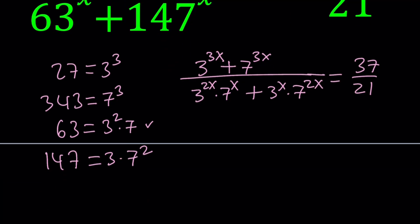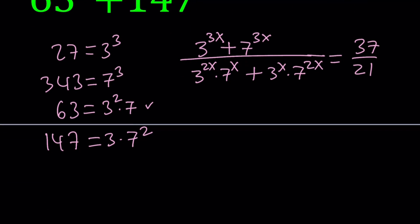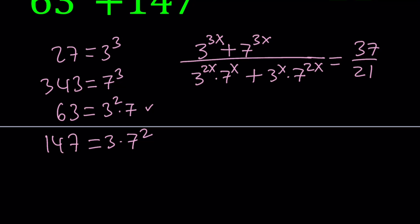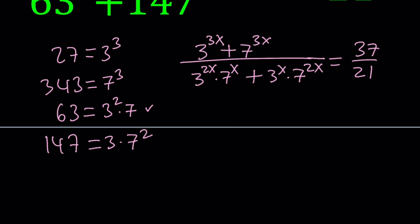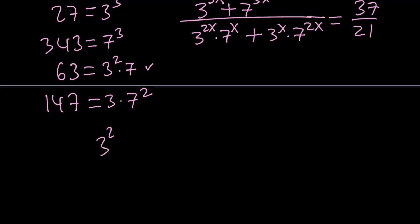Where do we go from here? Looks like we have some common factors, so we can take out some stuff. I'm going to take out 3^x times 7^x as a common factor, and that's going to give me inside the parentheses 3^x + 7^x.